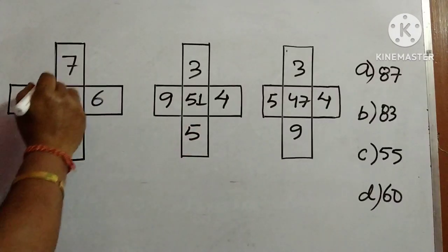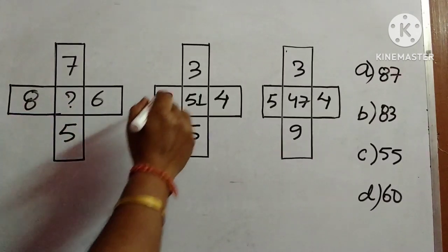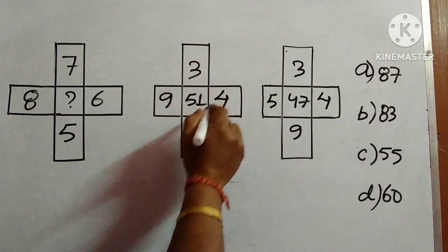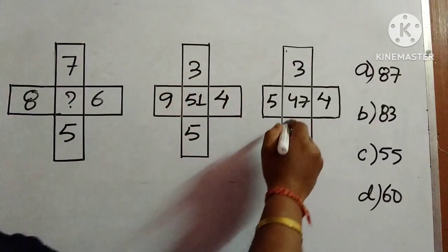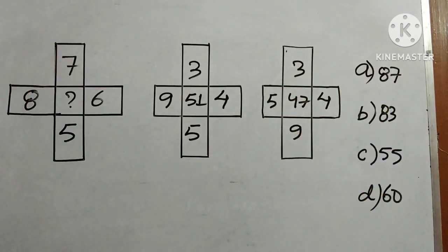Three figures are given. In the first figure 8, 7, 6, 5 is given and we need to find out this number. In the second figure 9, 3, 4, 5, 51 is given. In the third figure 3, 4, 9, 5 and 47 in the middle. Four options are given. Please like, share, comment and subscribe.